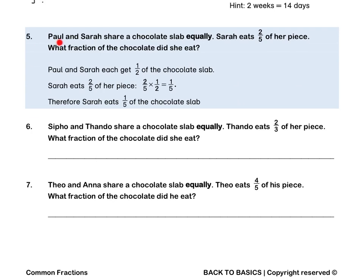Question 5. Paul and Sarah share a chocolate slab equally. Therefore, each gets 1 half of the slab. Sarah eats 2 fifths of her piece. What fraction of the chocolate did she eat? Paul and Sarah each get a half of the slab. Sarah eats 2 fifths of her piece. Remember, 'of' means times. We write out our sum, divide top and bottom by 2, to get a final answer of 1 fifth.